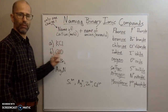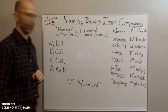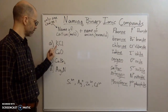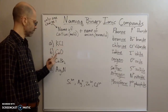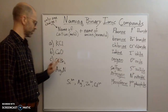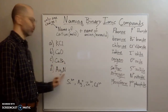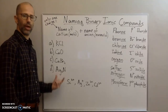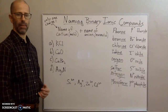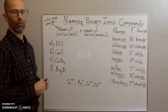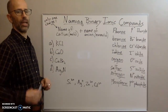We're only looking at ionic compounds that have two different elements in the formula. For example: potassium and chlorine, calcium and oxygen, calcium and bromine, and silver and nitrogen — only two different elements in each compound. Now we're going to go over how to name these particular ionic compounds.